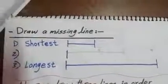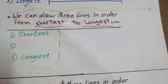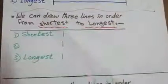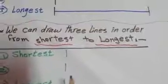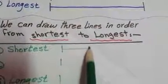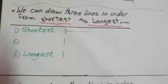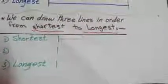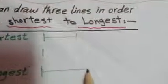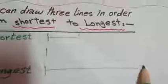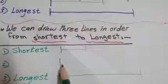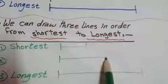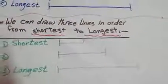Great job! We can draw three lines in order from the shortest to the longest. The shortest one has to be very small, I can draw it like this. Then the longest one has to be much bigger. And the middle one must be in between them — I can draw it anywhere in that area.